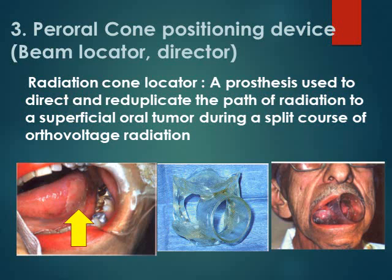The per-oral cone positioning device — also called a beam locator or beam director — is used for treatment of superficial lesions by orthovoltage radiation, which is radiation of about 250 kiloelectron volts. Since radiation is delivered over several weeks, this device directs the beam to the same position every time.